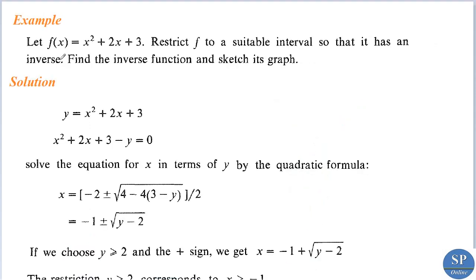If we draw vertical lines on this flipped curve, each line will pass through more than one point, so this is not a function. Now we can discuss another example: let f of x equal to x squared plus 2x plus 3; restrict f to a suitable interval so that it has an inverse. Also find the inverse function and sketch its graph.